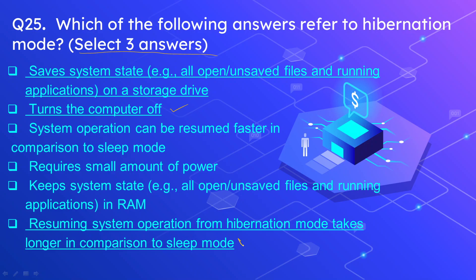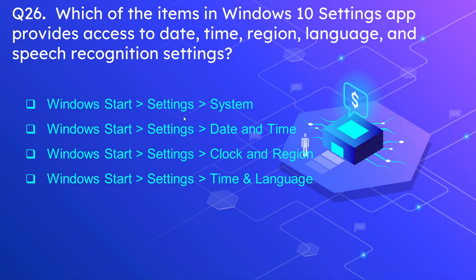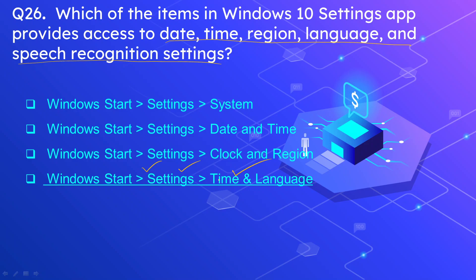Question number 26: Which of the items in the Windows 10 Settings app provides access to date, time, region, language, and speech recognition settings? The correct option is: Windows Start, then Settings, then Time and Language.